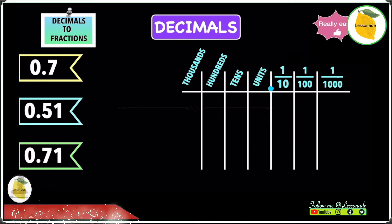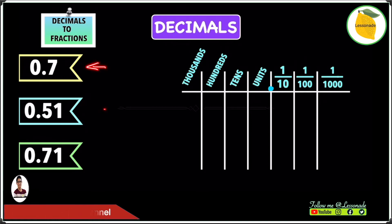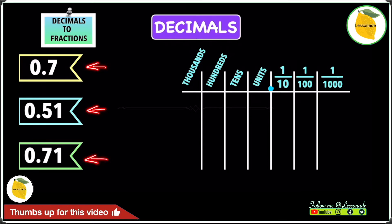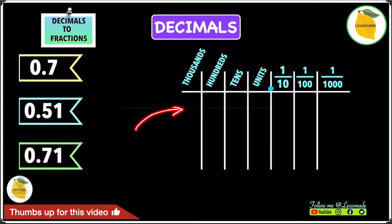So this topic is really easy. We're going to start off by writing these numbers: 0.7, 0.51, and 0.71. We're going to convert these numbers into fractions by using the place value table, such as this one right here.